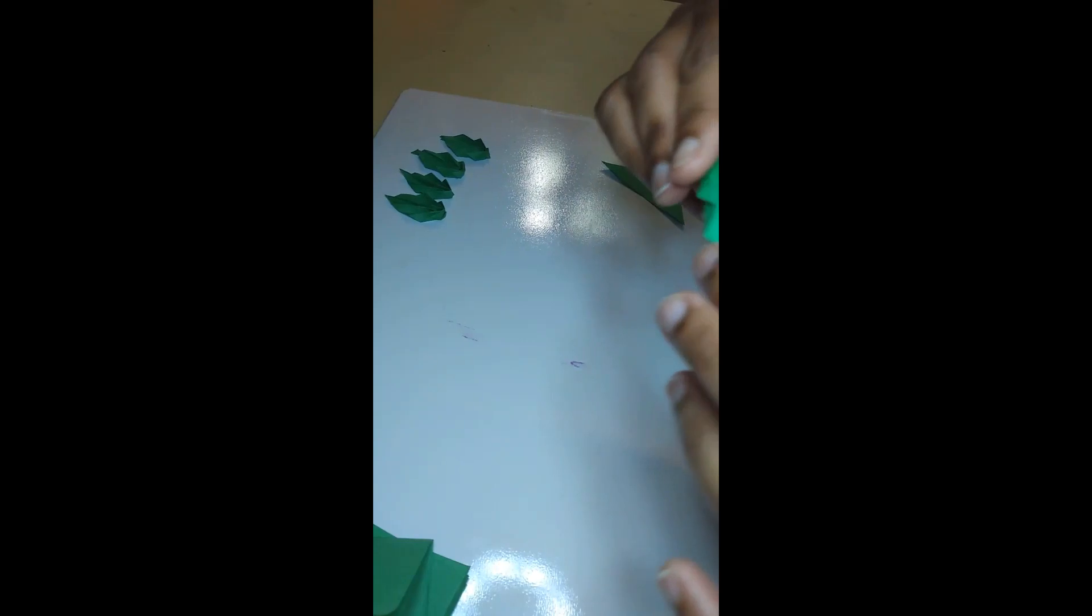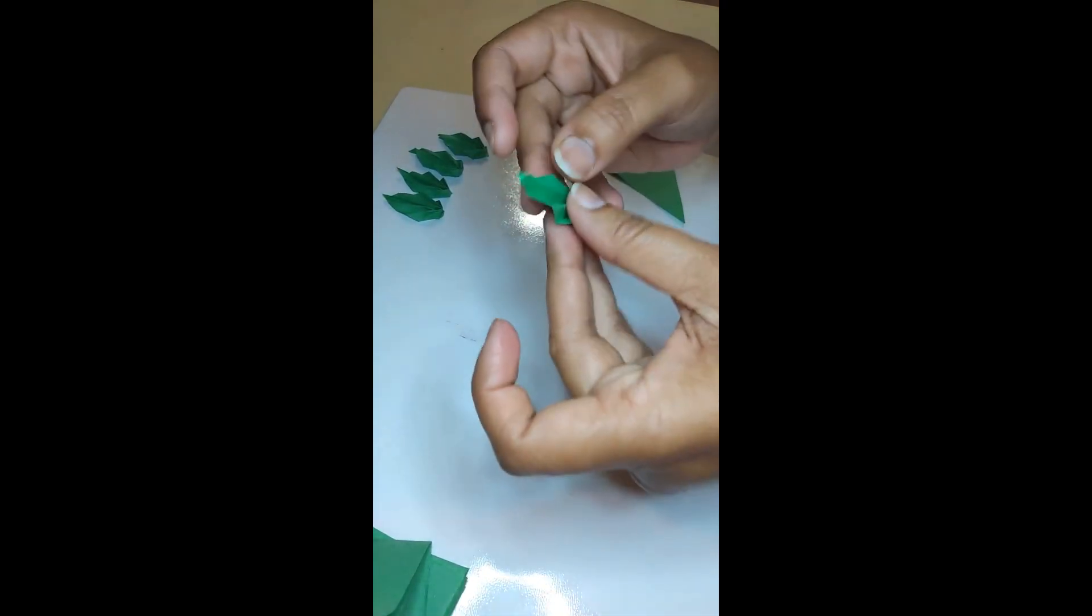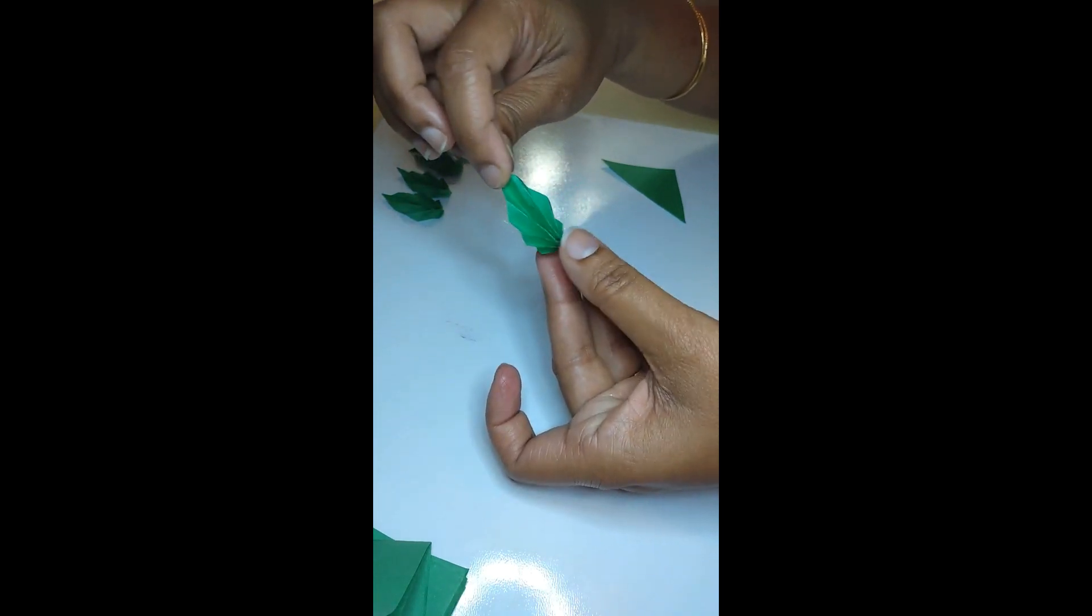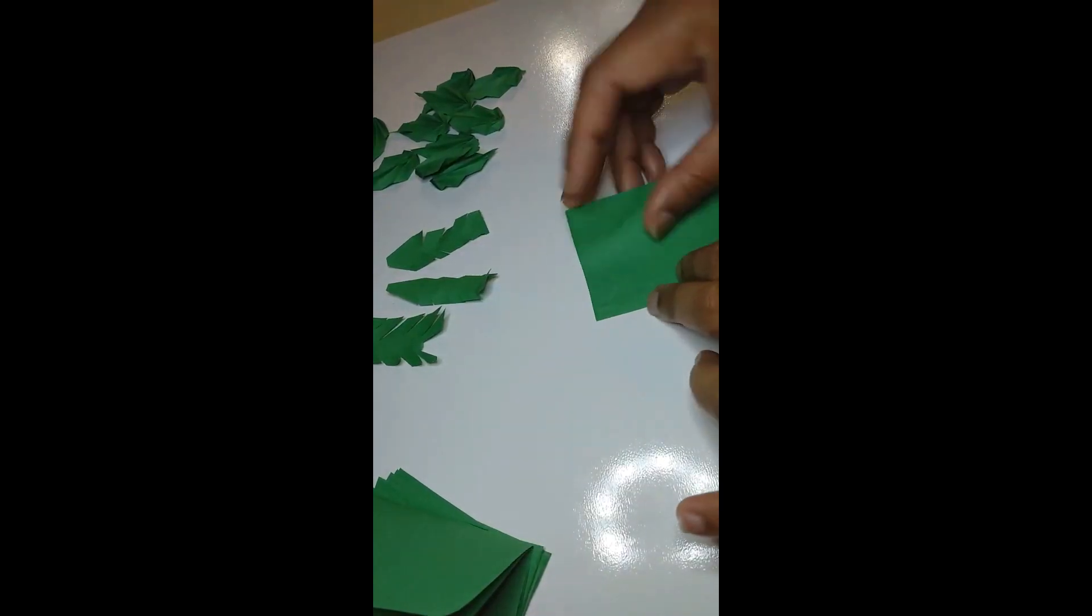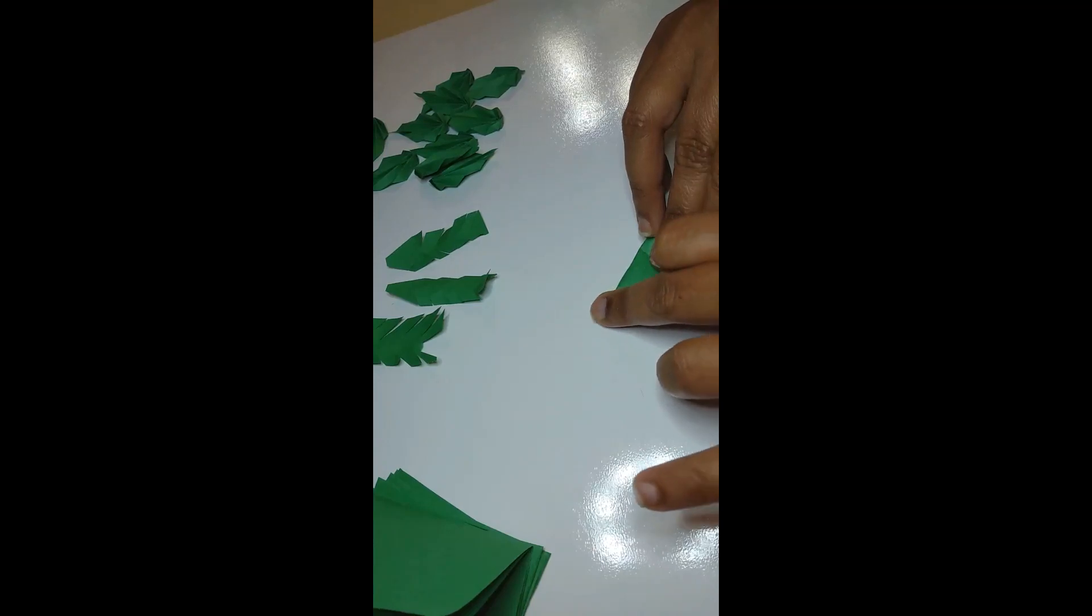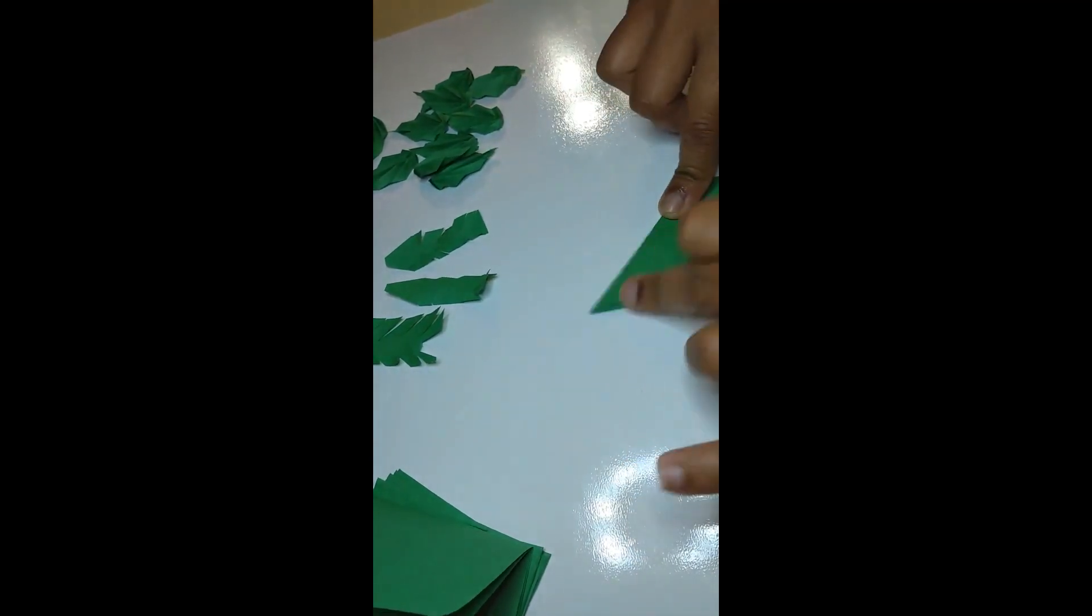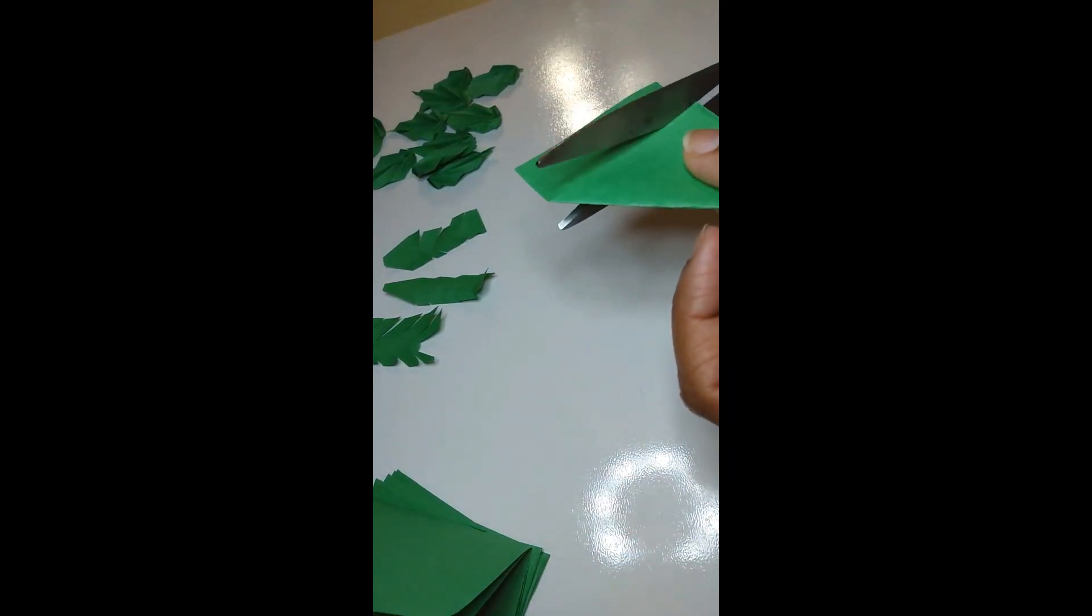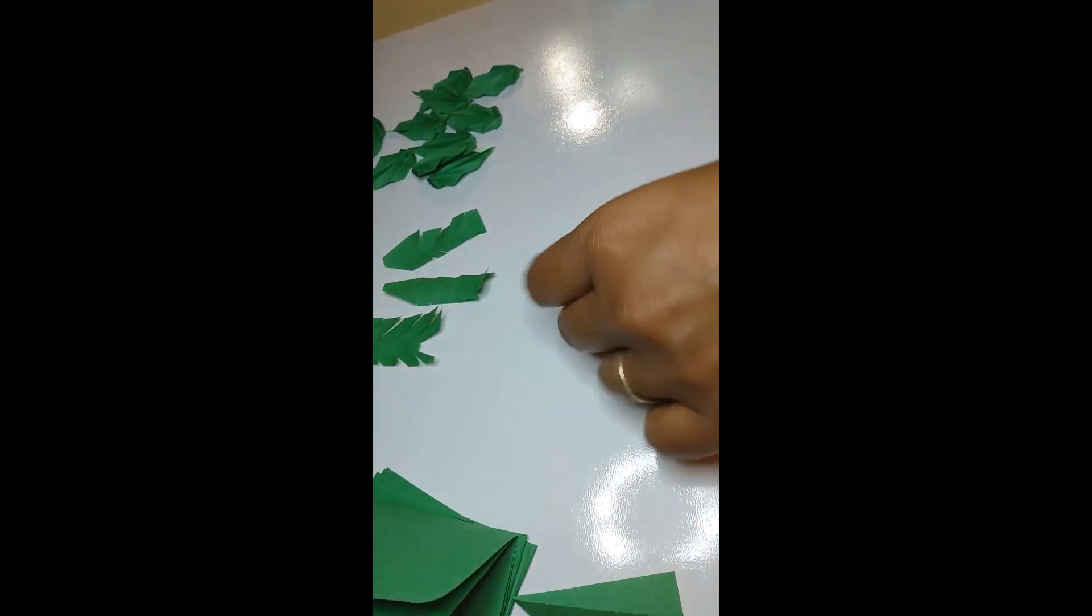Now let's start making another way of leaf. Here also fold it in a triangle shape and cut the edges. Here instead of triangle shape, you need to take the edge.